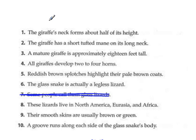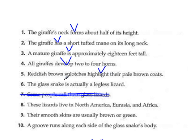So we're going to go through first, of course, and find our verbs like we usually do. Number 1 is forms, 2 has, 3 is, 4 develop, 5 highlight, 6 is, 7 we skipped, 8 is live, 9 is are, and 10 is runs.